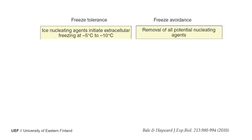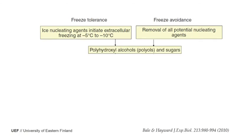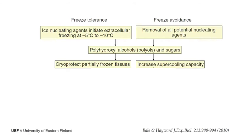There are two strategies: tolerate freezing or avoid it. Freeze-tolerant animals use ice-nucleating agents to initiate ice formation at, for example, minus 5°C. Freeze-avoiding animals try to remove all nucleating agents from their body fluids. Both groups use polyols — polyhydroxy alcohols — and sugars to either lower the supercooling point or keep part of the solution unfrozen, protecting partially unfrozen tissues.